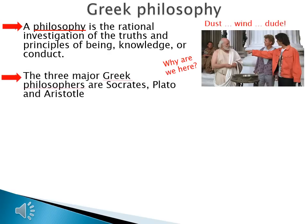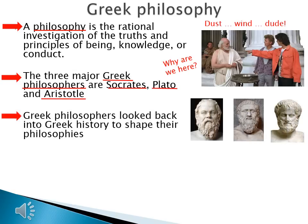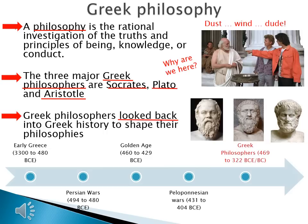There are three major Greek philosophers you're going to learn about: Socrates, Plato, and Aristotle. Greek philosophers looked back into Greek history to shape their philosophies, and there's a lot of Greek history to look back into. Early Greece starts around 3300 BCE. We have the Persian Wars from 494 to 480 BCE, the Golden Age of Greece from 460 to 429 BCE, and the Peloponnesian Wars from 431 to 404 BCE. Our three Greek philosophers live at the end of this civilization, from 469 to 322 BCE, and from their perspective they can really see how Greece developed differently.